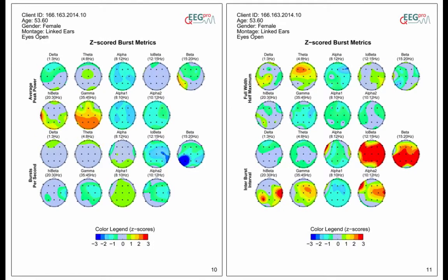The burst detection algorithm distinguishes four different burst features: Average Peak Power, Bursts Per Second, Full Width Half Maximum, and Inter Burst Interval.